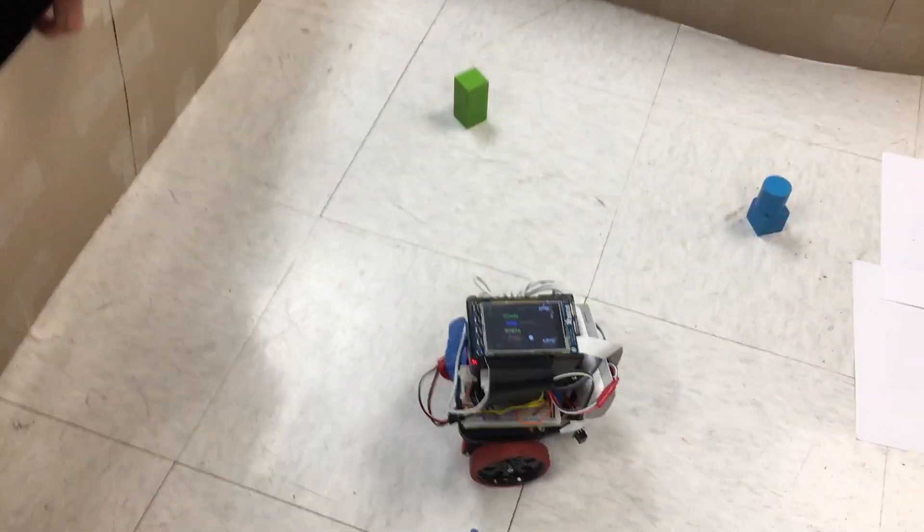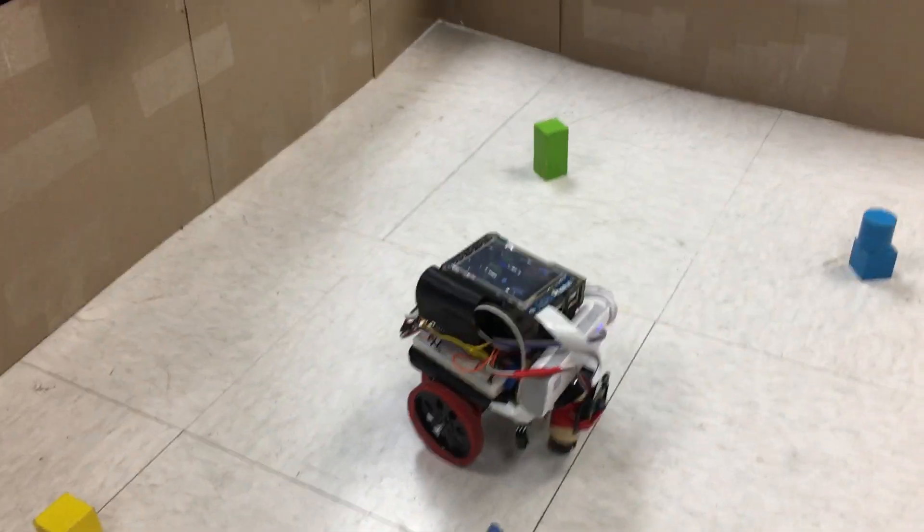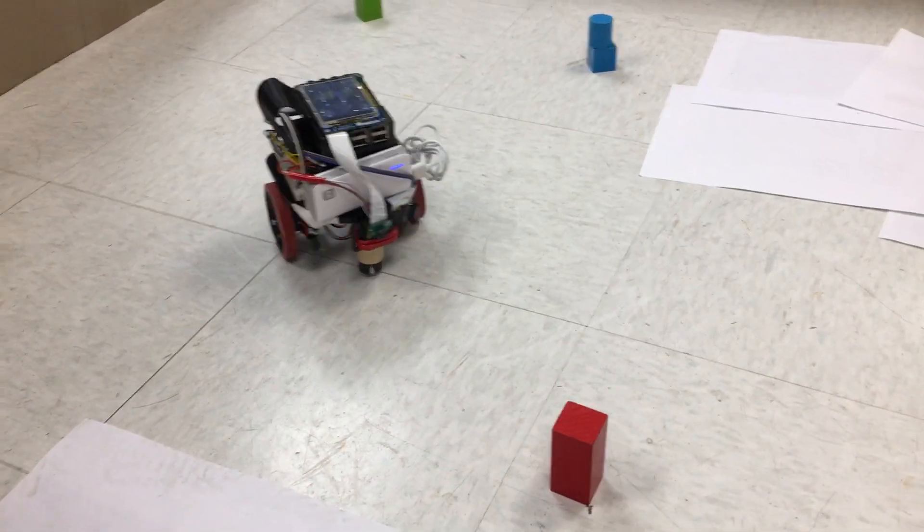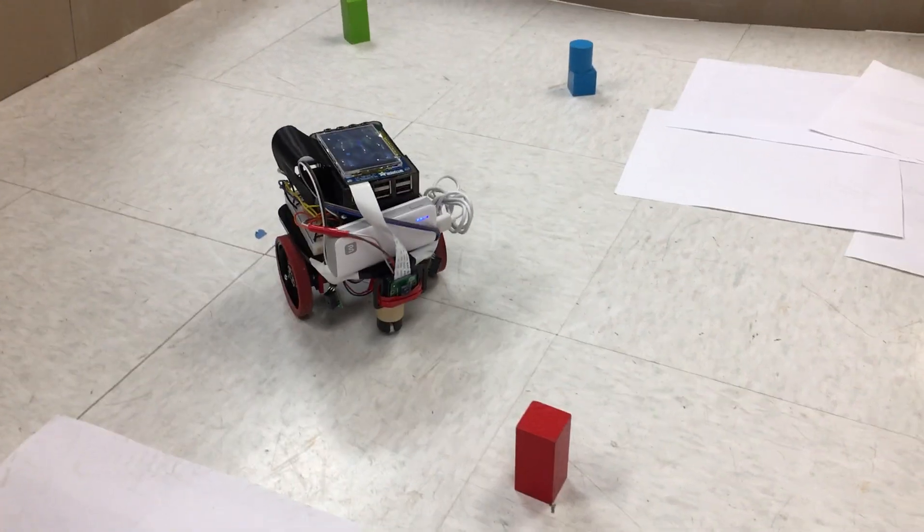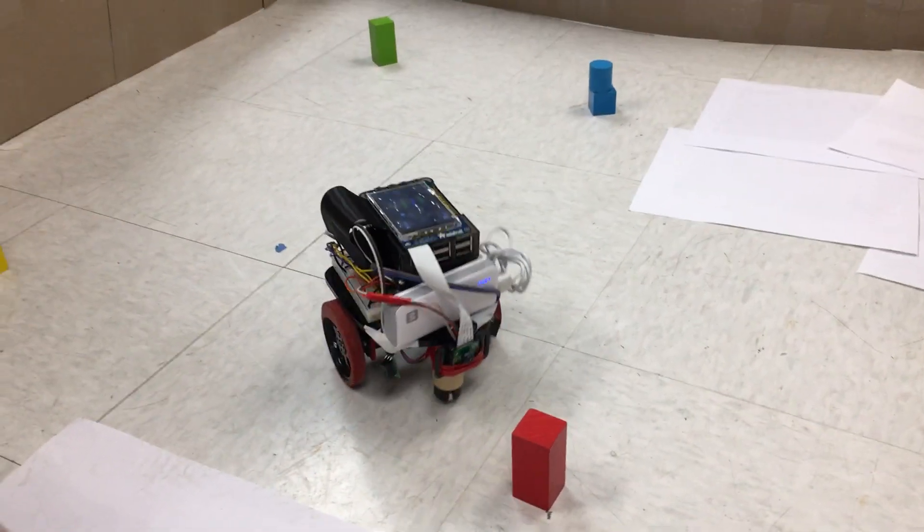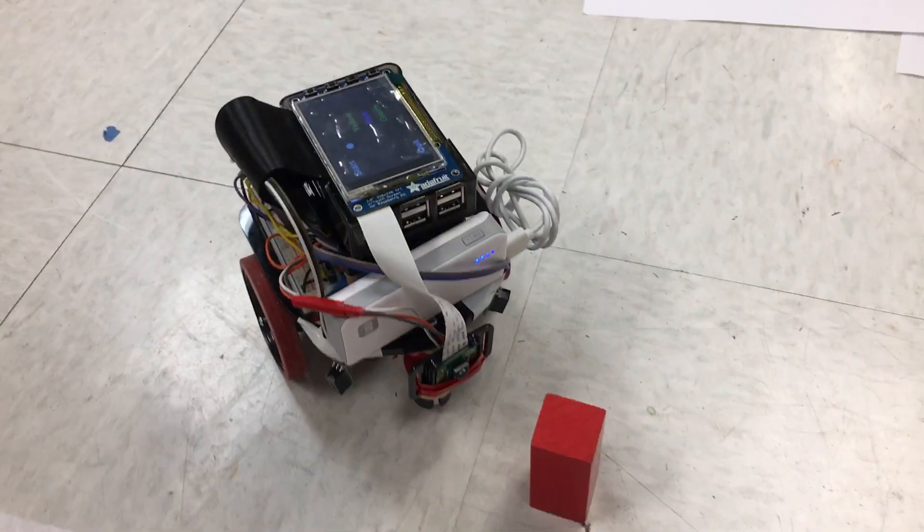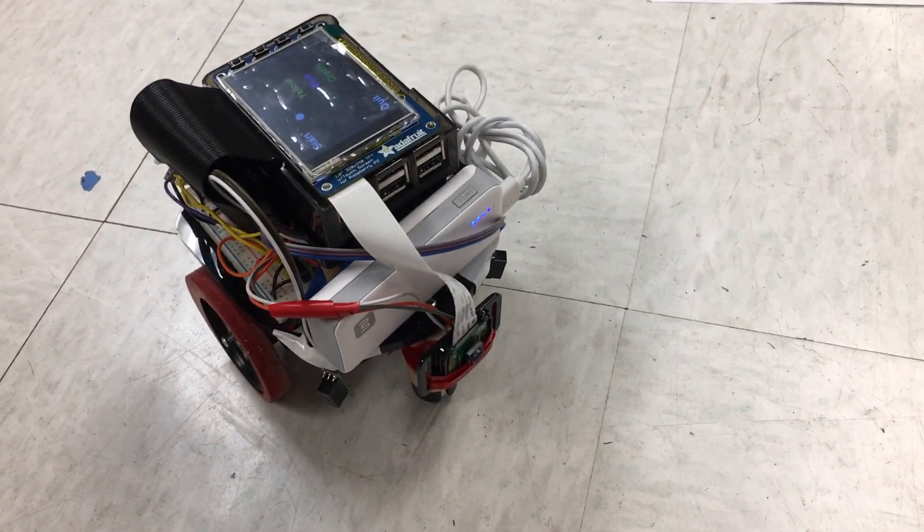So currently the robot is looking for red. And then here it found it, so it's navigating to the red object. So we use the Raspberry Pi camera to capture the images.